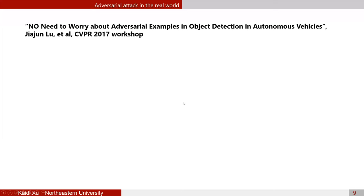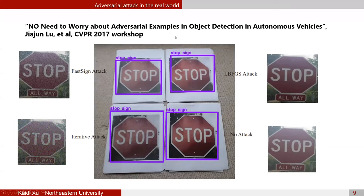A CVPR 2017 workshop paper claimed there is no need to worry about adversarial examples in object detection for autonomous vehicles. The authors naively printed out adversarial examples generated in the digital world using attacks like FGSM or L-BFGS, then recaptured them with a camera. It was unsurprising that the adversarial examples became invalid due to information loss during printing and recapture — but this at least demonstrated that adversarial examples are fragile, and certain transformations can invalidate them.